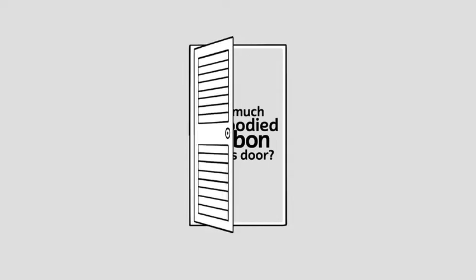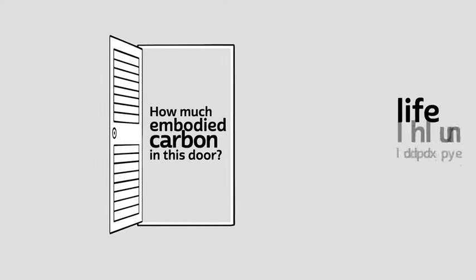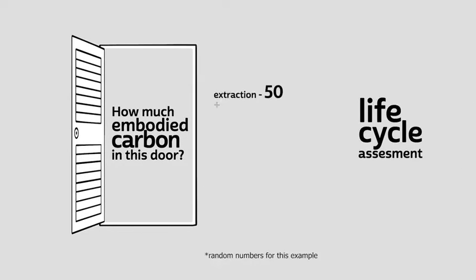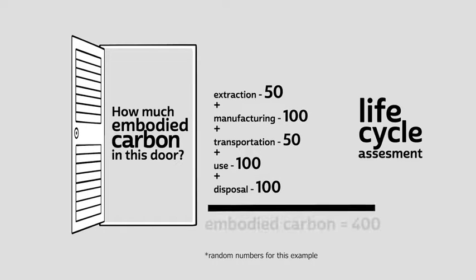To understand embodied carbon, we need data. This data comes from studies called Life Cycle Assessments, or LCAs, which look at all phases of a material's lifespan and add up all the carbon emissions that happen.